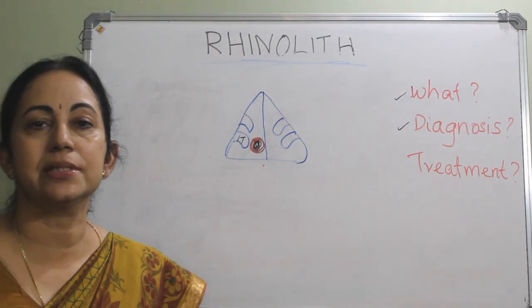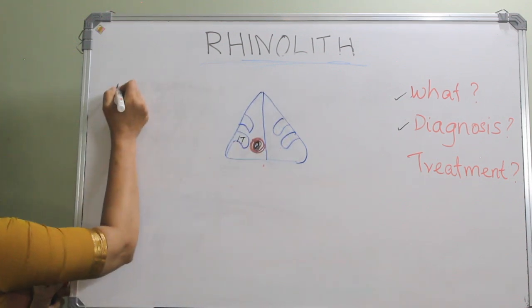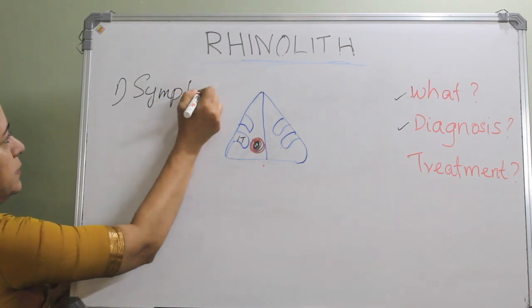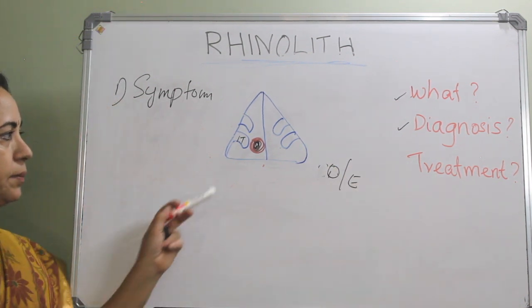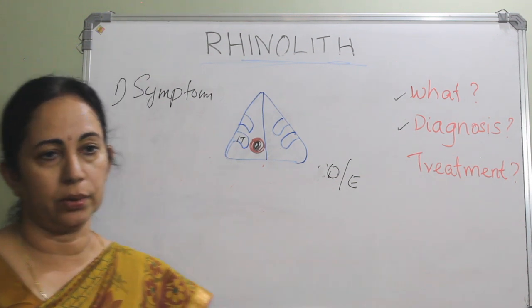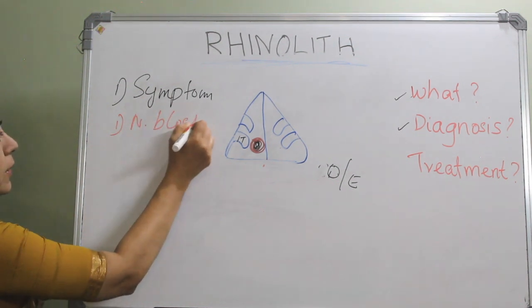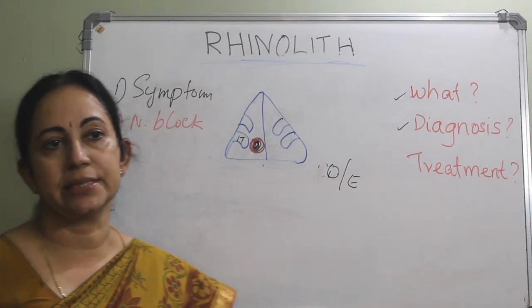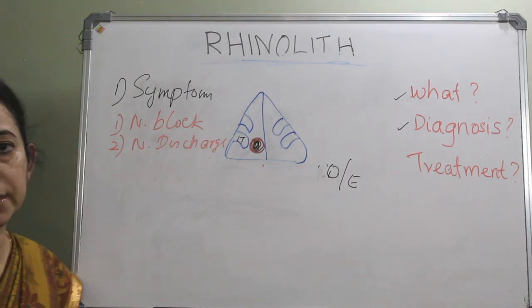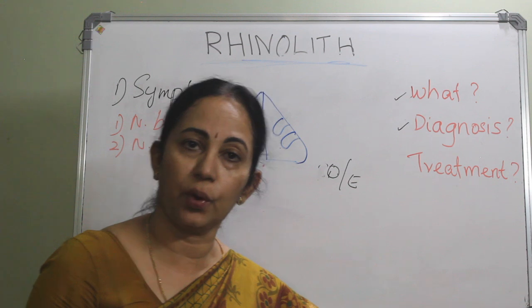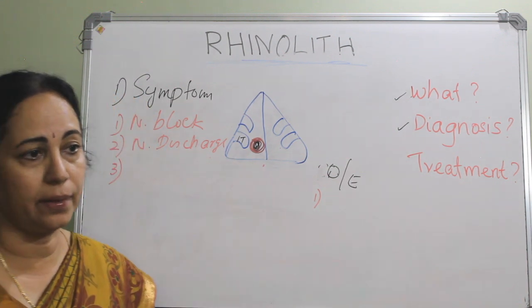Diagnosis is straightforward because of the typical symptoms and examination findings. The commonest symptom is nasal block, as there is a mass sitting inside the nose. There will also be foul-smelling purulent nasal discharge. If there is unilateral foul-smelling purulent nasal discharge, you should always think in terms of a foreign body in the nose. On examination you can see a greyish or brownish mass.